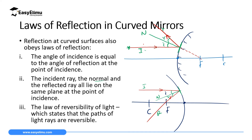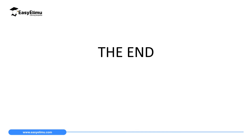Curved mirrors also obey the third law of reflection, which we call the law of reversibility of light, which states that the path of light rays is reversible. This means if you reverse the reflected ray it will go back to the mirror and be reflected back to the original point. Similarly, if a ray comes in through point F in a concave mirror, when it hits the mirror it will be reflected parallel to the principal axis. So curved surfaces obey all three laws of reflection. That marks the end of our lesson today — in the next lesson we will discuss ray diagrams.